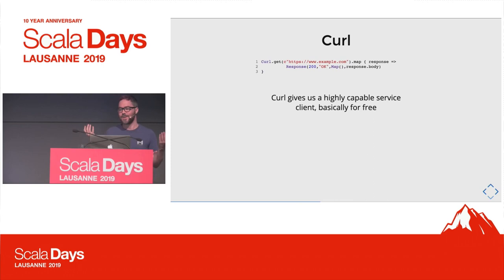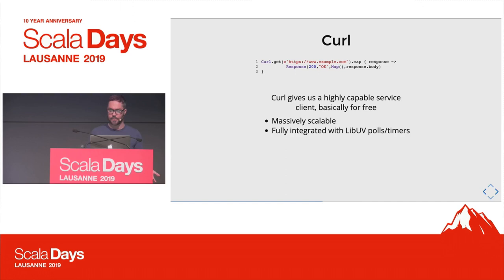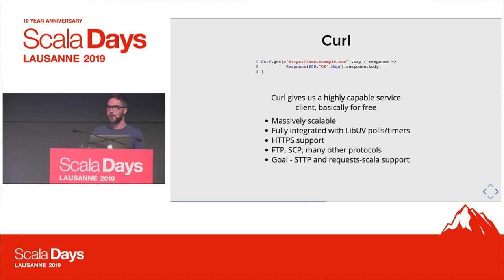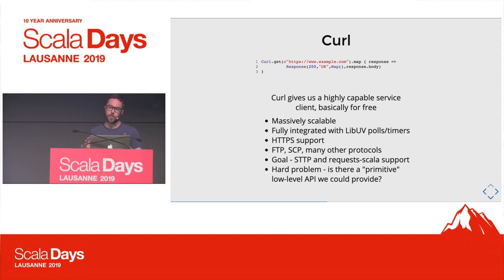For libcurl — the famous libcurl C library — it's incredibly comprehensive and pretty simple by comparison. We get a really awesome, highly scalable HTTP and HTTPS client that integrates great with LibUV's polls and timers. It has great HTTPS support — implementing HTTPS from scratch is hard, so getting it for free is amazing. It also supports about 20 other protocols like FTP, SCP, and IMAP. My goal is to get support for STTP or request-Scala rather than design the API myself, and punt the API design to those libraries.